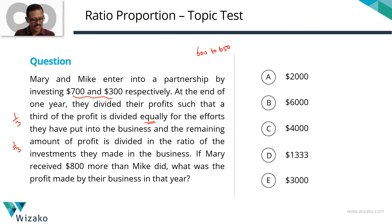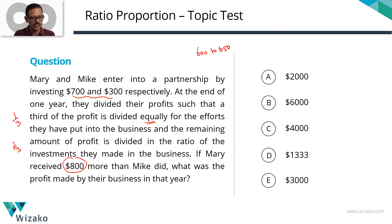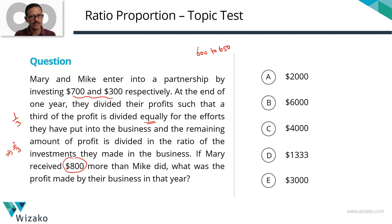If Mary received 800 more dollars than Mike, what was the profit made by the business in that year? Mary is receiving this extra 800 dollars not on account of the one-third effort component, but on account of the difference in how they distributed the two-thirds of the profit, which was distributed in the ratio of their investments. The one-third was divided equally. Let's draw a schematic to understand what happened and then solve the question.